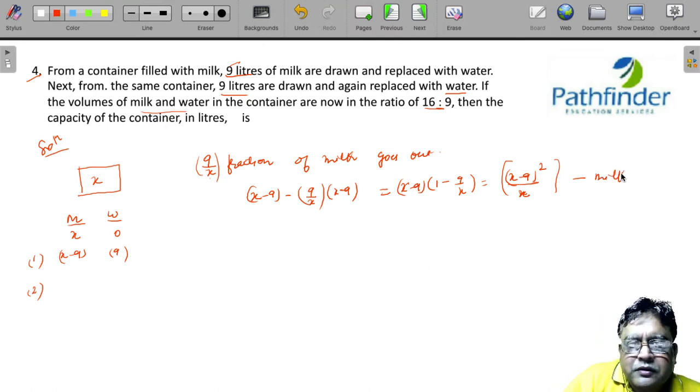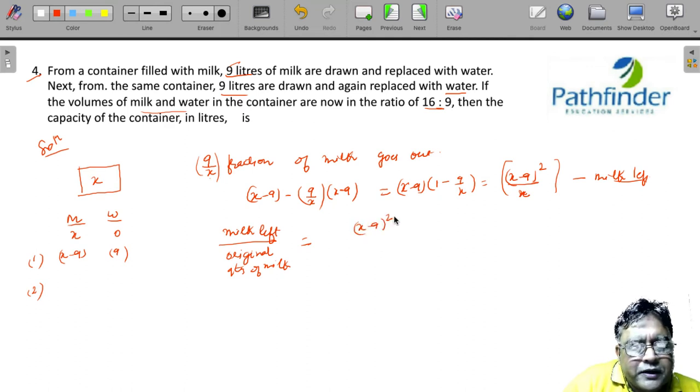This is milk left. So can we say that milk left upon the original quantity of milk must be equal to x minus 9 whole square upon x upon the original quantity of milk, which is x? So I can write the whole of this as x minus 9 upon x whole square.